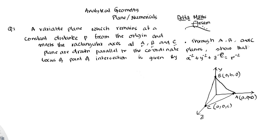According to the question, planes are drawn through A, B, C and these planes are parallel to the coordinate planes. The equation of plane parallel to xy plane is z equal to constant, equation of plane parallel to yz plane is x equal to constant, and equation of plane parallel to zx plane is y equal to constant. So what is the locus of the point of intersection? Let's solve it.